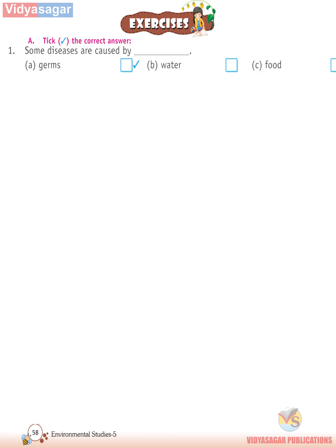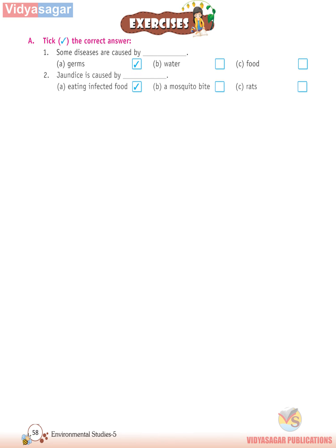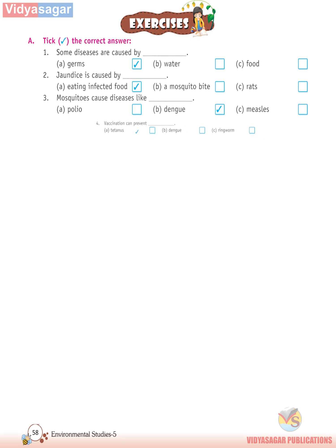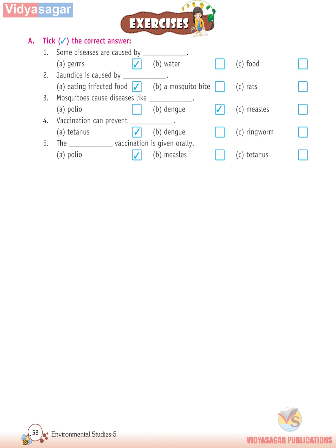Exercises — A. Check the correct answer. First, some diseases are caused by germs. Second, jaundice is caused by eating infected food. Third, mosquitoes cause diseases like dengue. Fourth, vaccination can prevent tetanus. Fifth, the polio vaccination is given orally.